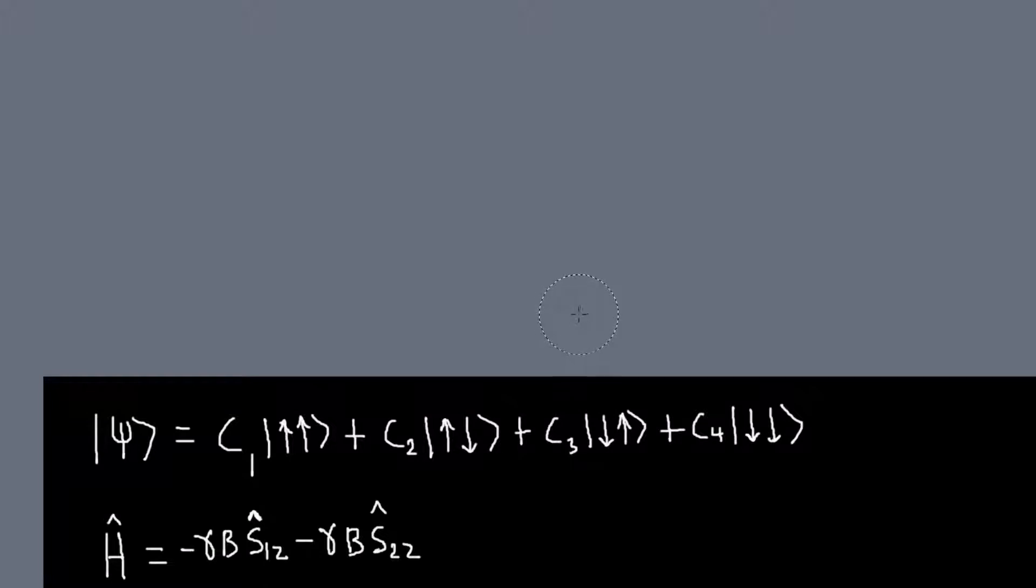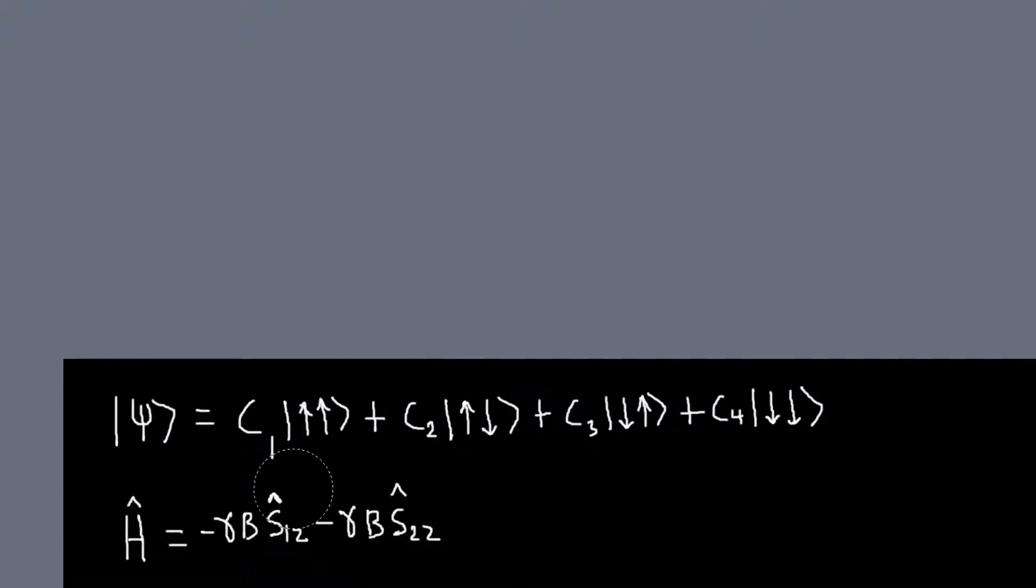And the problem I wanted to look at is, again, we're going to have our two particles in a magnetic field that's in the z direction. And so our Hamiltonian will just be basically the sum of two of our single-particle Hamiltonians that we dealt with before.